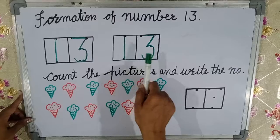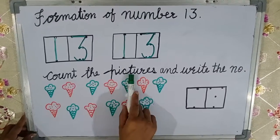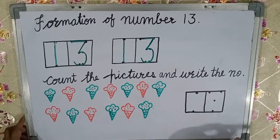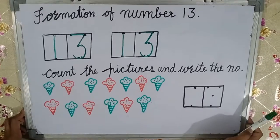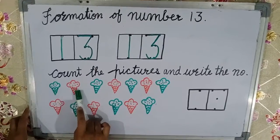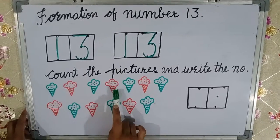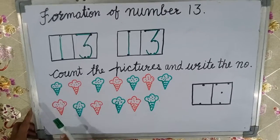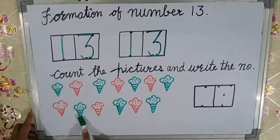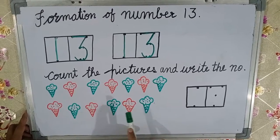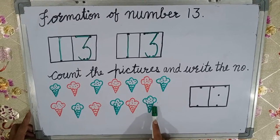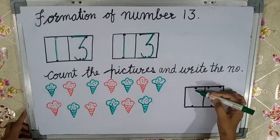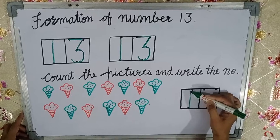Now kids, count the pictures and write the number. We have to count the pictures: one, two, three, four, five, six, seven, eight, nine, ten, eleven, twelve, thirteen. We will put here one three — thirteen.